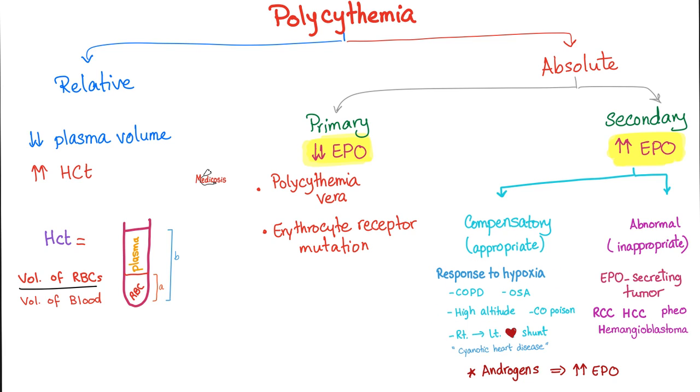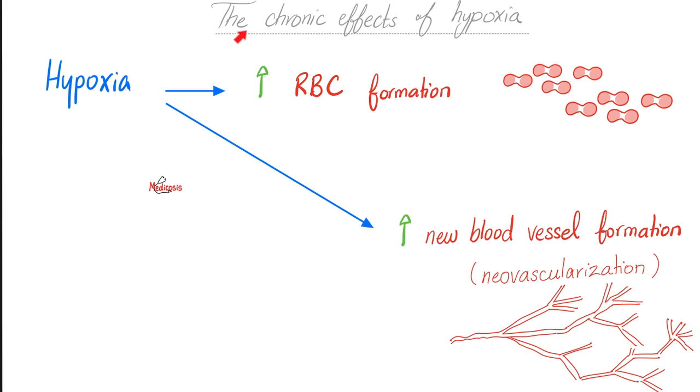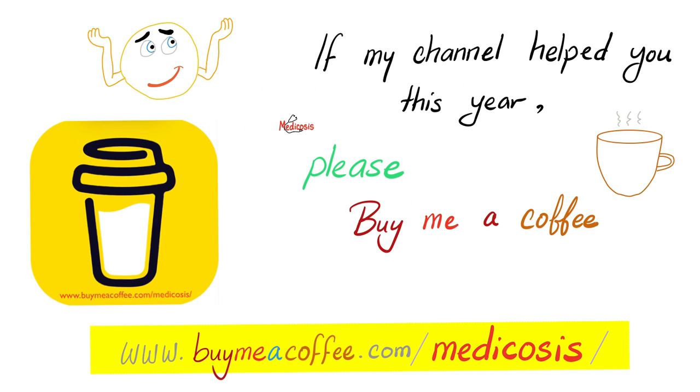When you go on top of a mountain, erythropoietin will go up. The kidney creates EPO. EPO will leave the kidney, go to the blood, reach the bone marrow, knock on the door of the bone marrow. Hey, make some more red blood cells. We're starving for oxygen. When you live on top of a mountain for a long period, you will make more red blood cells - polycythemia. Also, you will increase new blood vessel formation. More red blood cells and more blood vessels - neovascularization. New blood vessel formation. Come on people, these videos are beautiful. Please buy me a coffee. One cup of coffee a day keeps debt collectors at bay. Go to buymeacoffee.com slash medicosis.